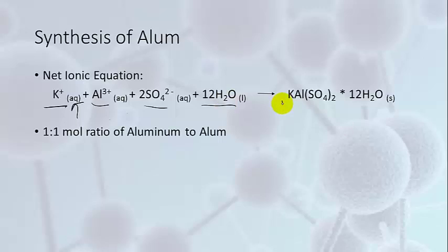To make alum. That's what this is. This is alum. This S means it's a solid, so it's an insoluble compound in water. What's important to notice is that we have a one to one mole ratio of aluminum to alum. That's going to be important later.